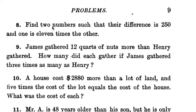Number eight: Find two numbers such that their difference is 250, and one is 11 times the other. So one, that's the number we know the least about, we'll make that our variable x. The other one is 11 times, so that's our two numbers. We know that difference means minus, and is means equal.